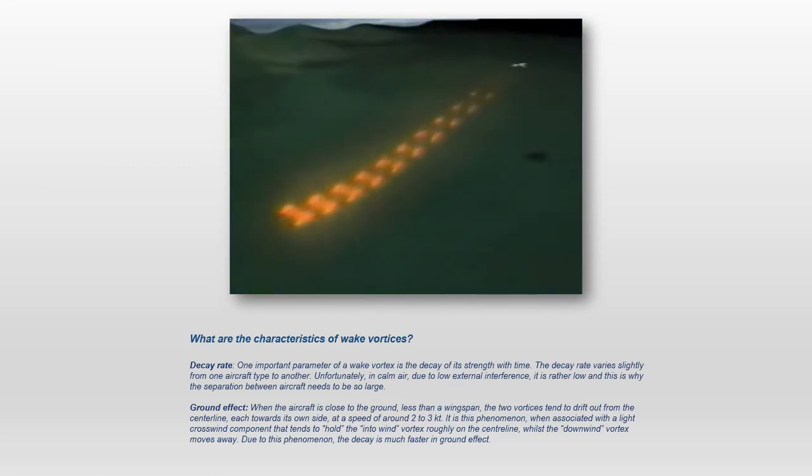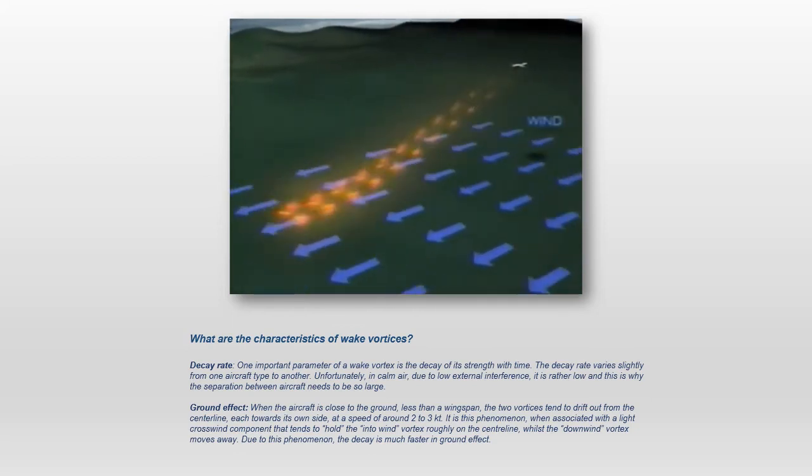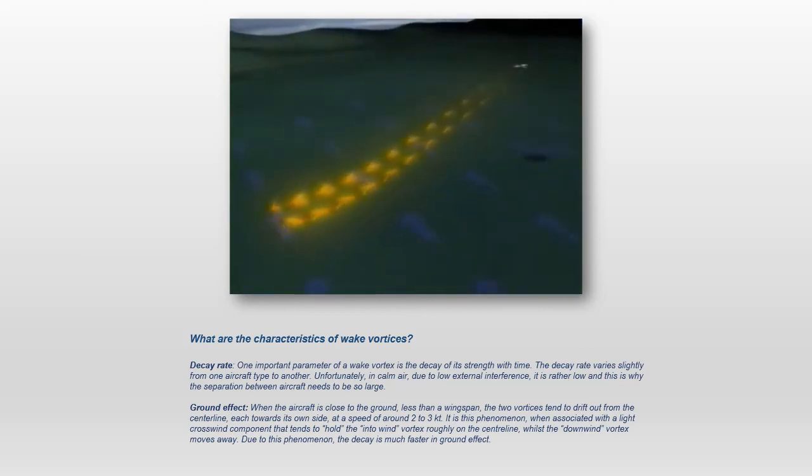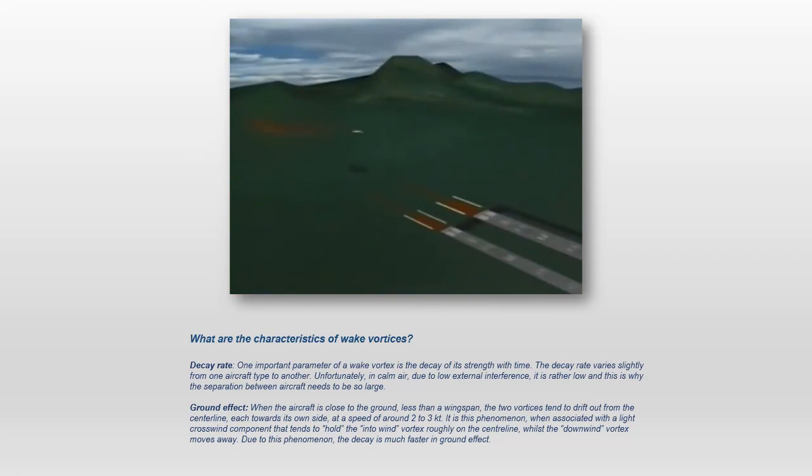The vortices are strongly influenced by ambient wind. A strong enough wind will dissipate the turbulence. A light crosswind will decrease the lateral movement of the upwind vortex and increase the movement of the downwind vortex. A tailwind condition can move the vortices forward into the touchdown area. One of the most hazardous situations is a light quartering tailwind.